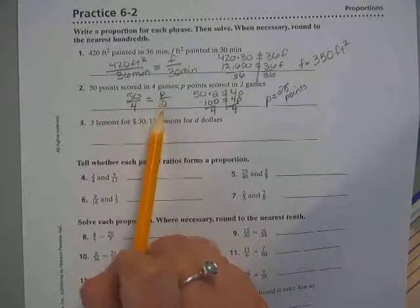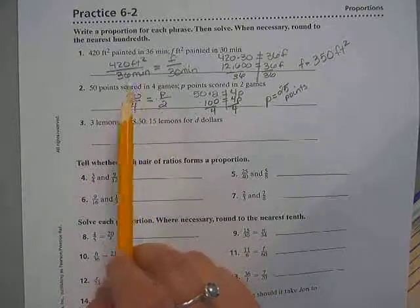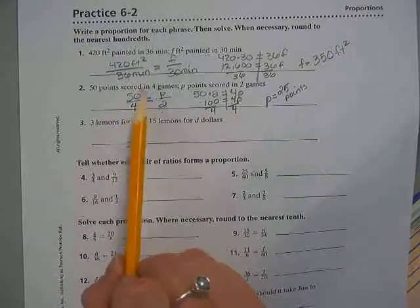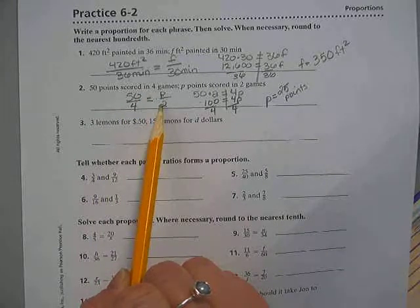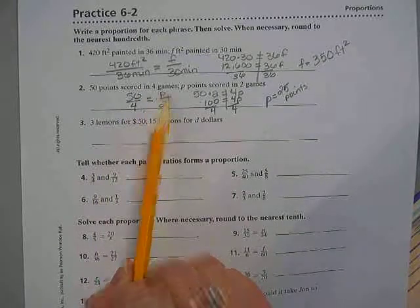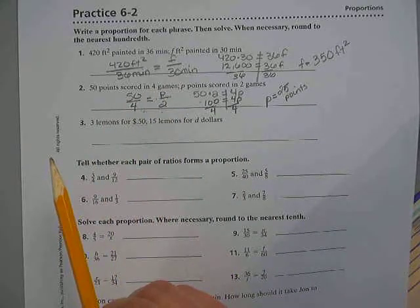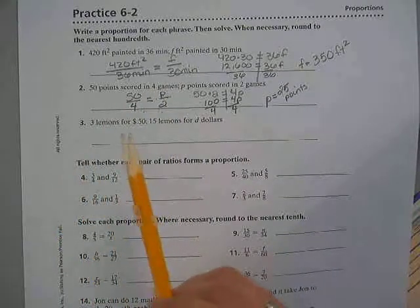That's what the cross product rule tells us, Thomas, is that if these are equivalent proportions, the cross products are equal to each other. So they have to be equal. So if I were to take 50 times 2, that has to equal whatever 4 times P is, 25.